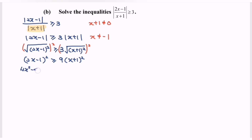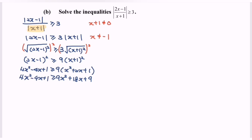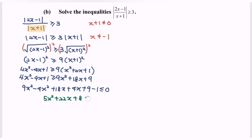So 4x² minus 4x plus 1 is greater than or equal to 9 multiplied by (x² plus 2x plus 1). Expanding the right side gives 9x² plus 18x plus 9. Rearranging, we have 9x² minus 4x² plus 18x plus 4x plus 9 minus 1 less than or equal to 0, which simplifies to 5x² plus 22x plus 8 less than or equal to 0.